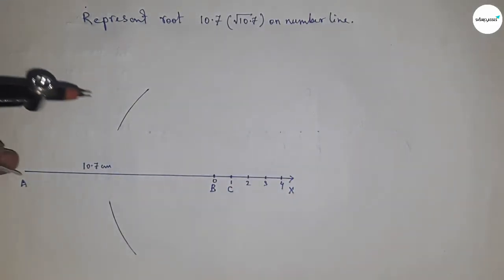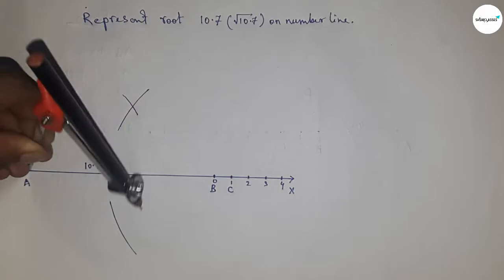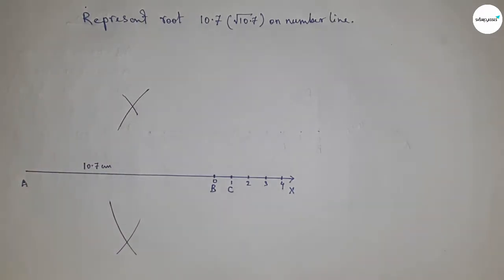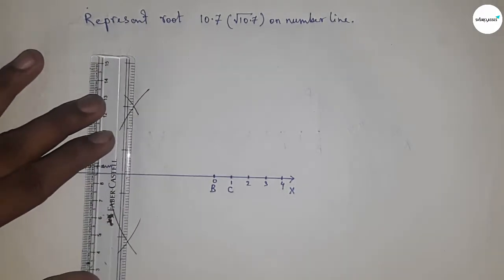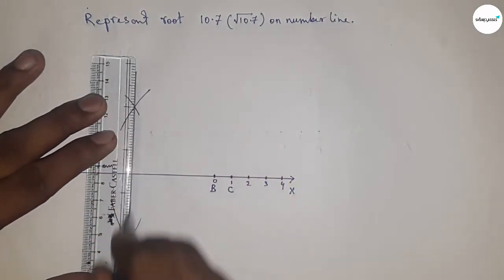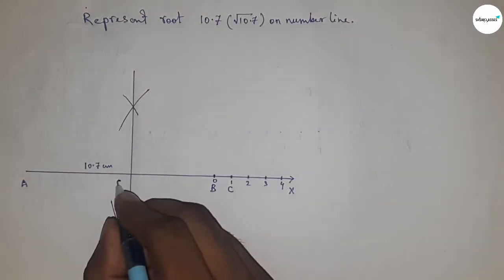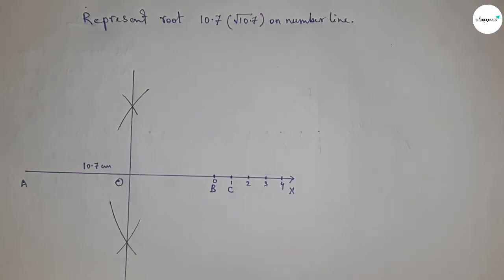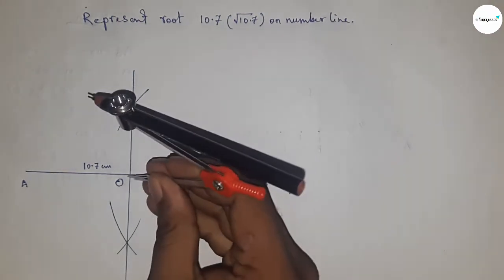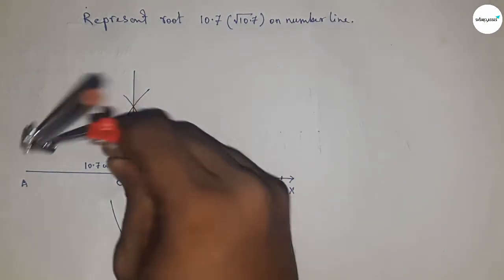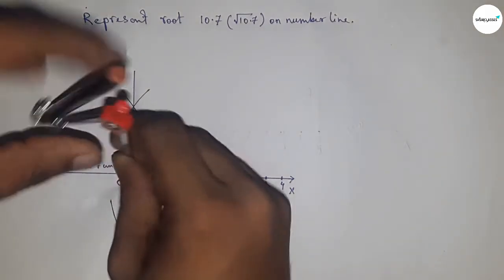Putting the compass here and cut the AX by this way. Now joining this which meet at a point O. Now taking the distance OA and OC to draw a semicircle through the point A and C.